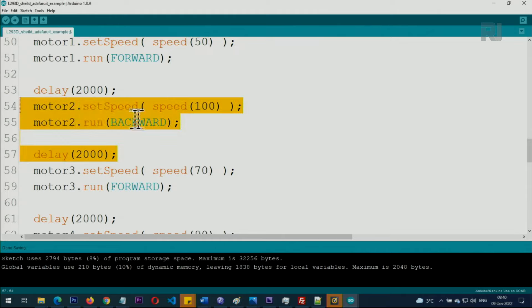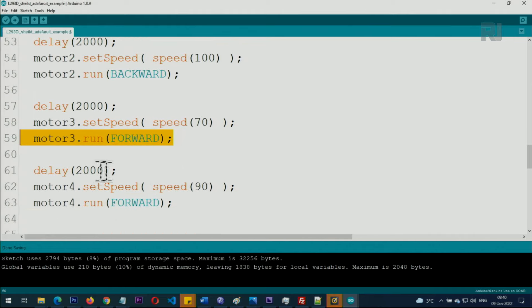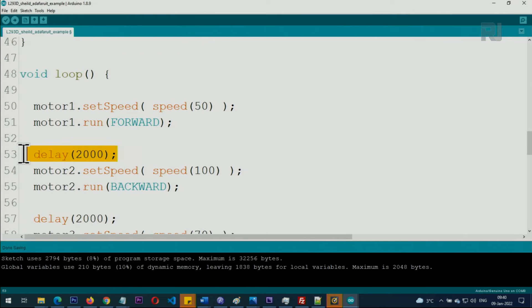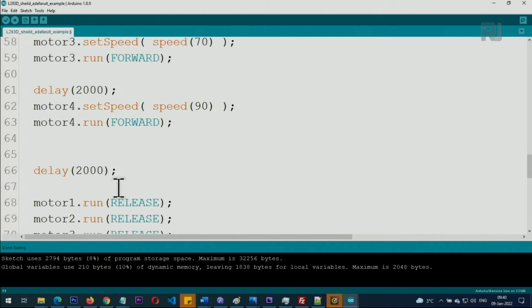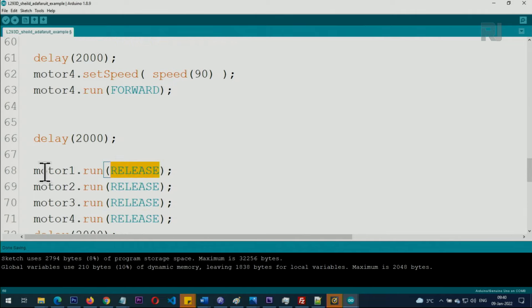So at this stage just motor one is running and all our other motors are stopped. So motor two is now running, and then after two seconds motor three is running, and after two seconds motor four is running. If you want to run all of them, just remove this delay and all motors will run together.